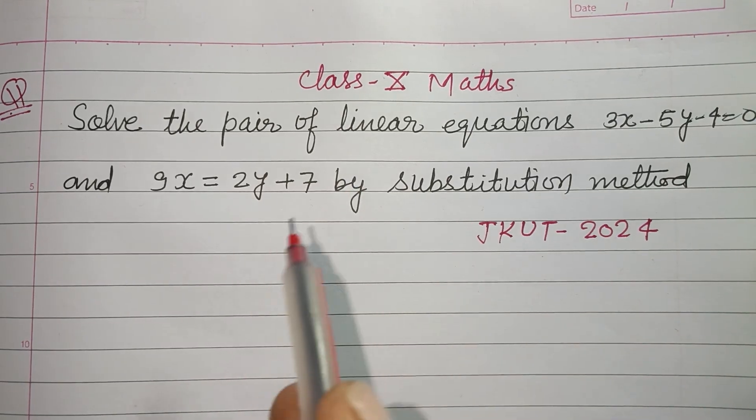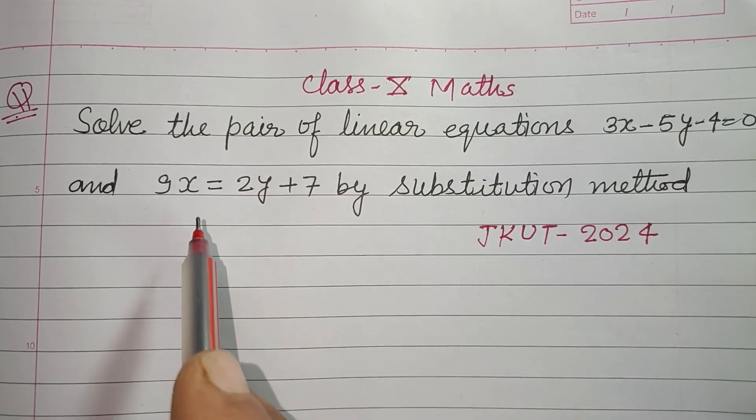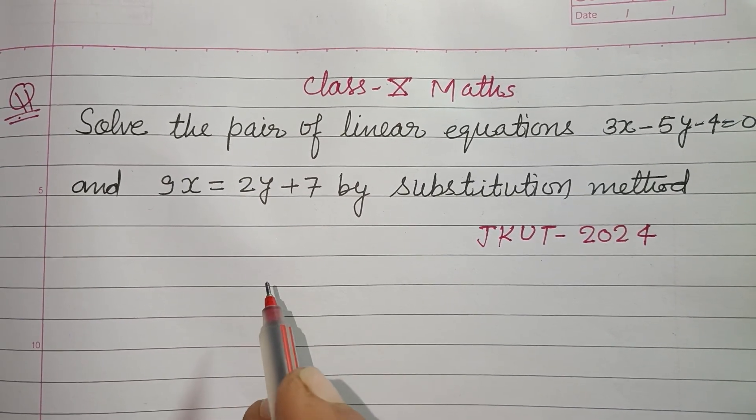Solve the pair of linear equations 3x - 5y - 4 = 0 and 9x = 2y + 7 by substitution method.